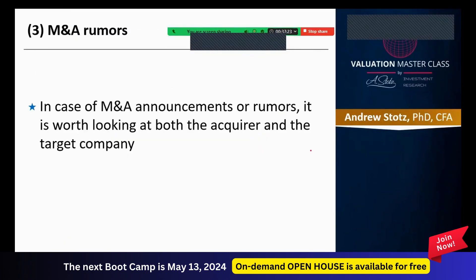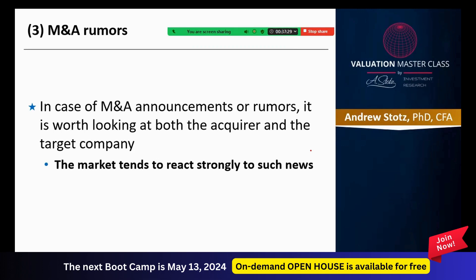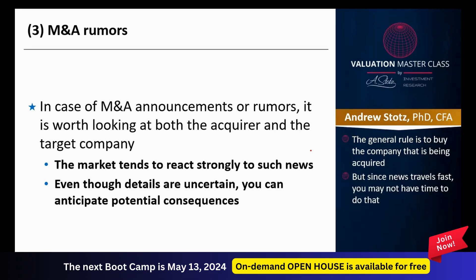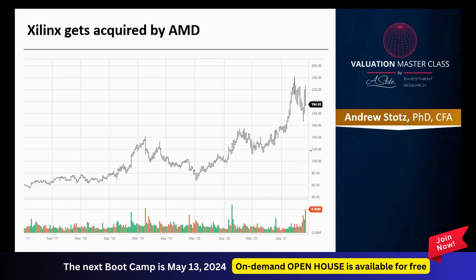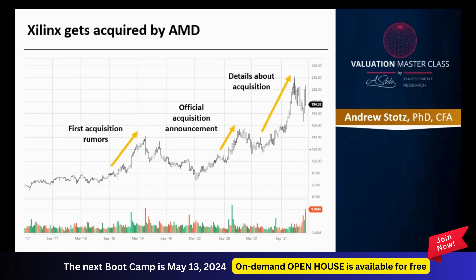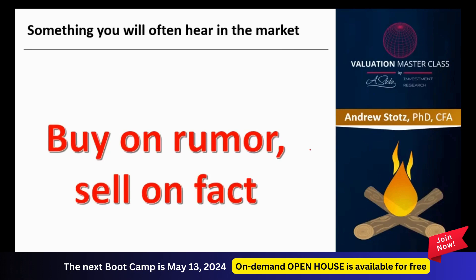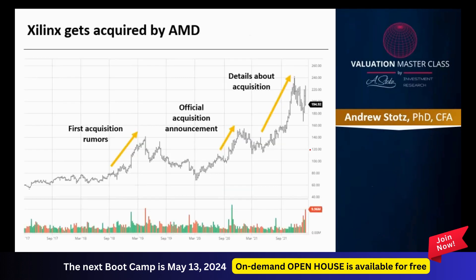In the case of M&A, it's worth looking at both the acquirer and the target company. The market tends to react strongly to this news even though details are uncertain — you can anticipate some potential consequences. The general rule is to buy the company being acquired, but since news travels fast you may not have time. Here we can see Xilinx gets acquired by AMD — there were rumors, then an official acquisition announcement, then details. Something you'll often hear in the market is 'buy on rumors, sell on fact' — if you had bought when the rumor first came out, you would have made a huge gain.